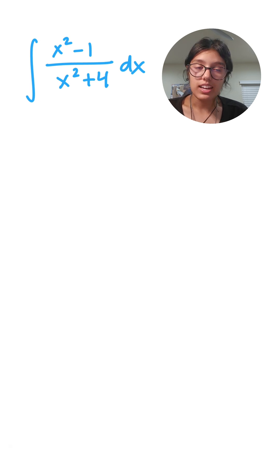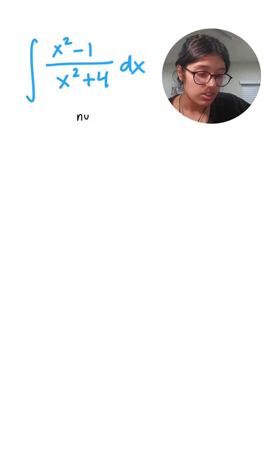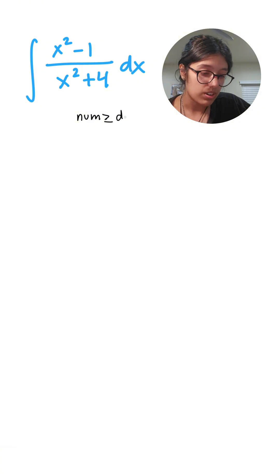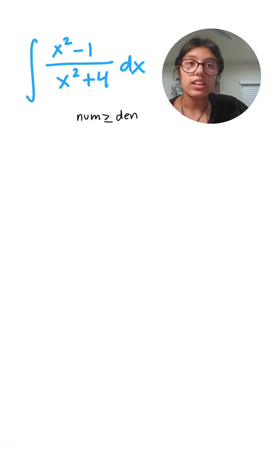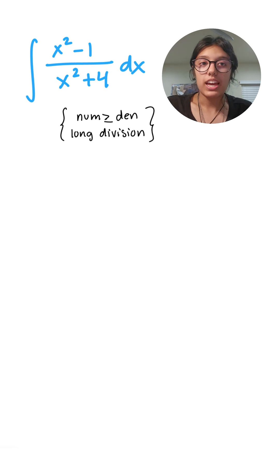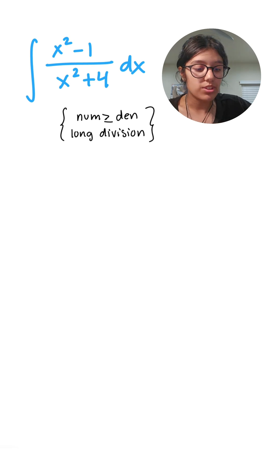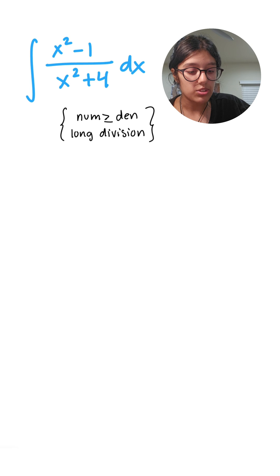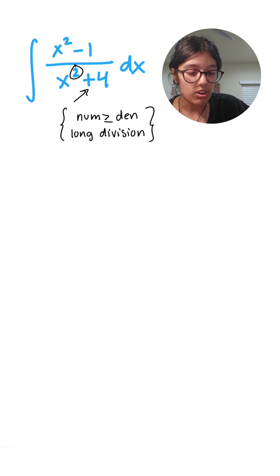We apply long division because if the exponent in the numerator is greater than or equal to the exponent in the denominator, then you can apply long division. By exponent I mean the greatest exponent — the greatest exponent at the top is 2, and the greatest exponent at the bottom is also 2. They're equal to each other, so we can apply long division.